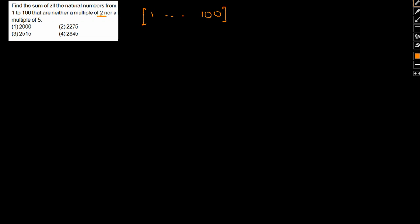First, let me find the sum of numbers from 1 to 100. Using the AP formula, sum equals n/2 times (first plus last term), which is 100/2 times 101. This comes to 50 times 101, which equals 5050.